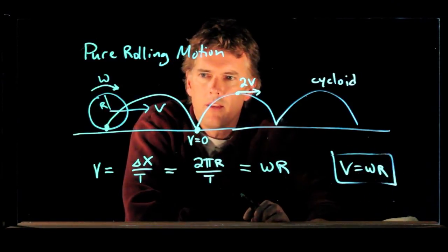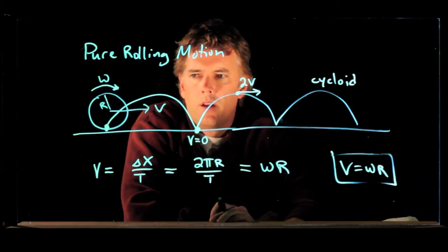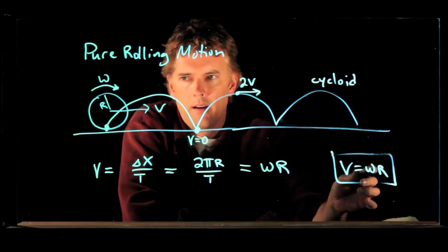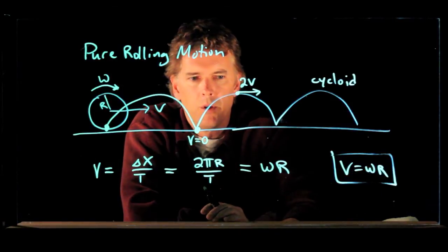So it's kind of interesting that the speed of the wheel is just related to how fast it's spinning, omega, times the radius of the wheel r.